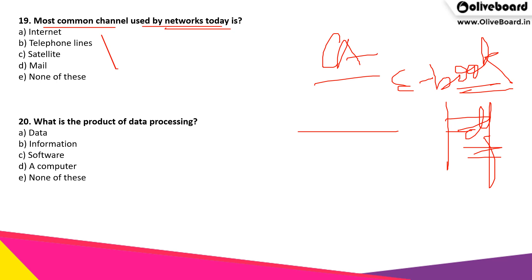For this particular question, the answer is telephone lines. Many of us may get confused by answering internet, because we may think that the most common channel used by networks is internet. But telephone lines are more common than the internet.